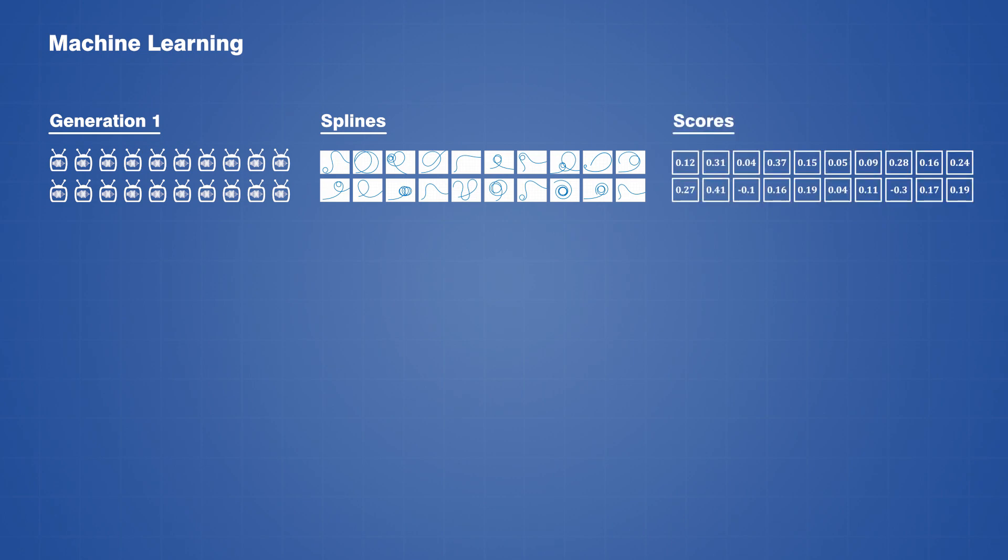This part can be quite computationally intensive depending on how many bots we have, but the greater the population size, the less generations we will need to find an optimal solution. From here, the top performing bots that rank in the top 10% are carried forward to the next generation, while all the others are left behind and discarded.